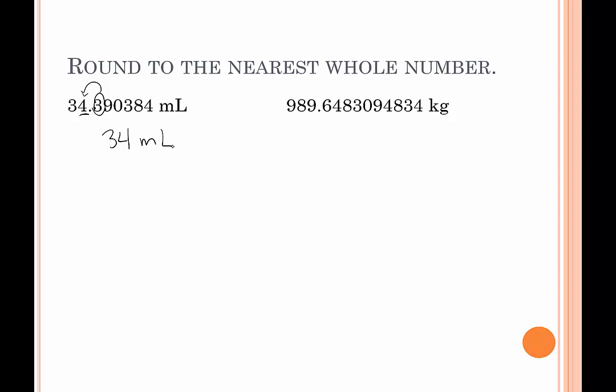In the next example, we have 989-point-something with a long decimal and we want to round to the nearest whole number. Here's our ones place — the end of the whole number. The 6 is in the critical position, so the 6 tells the 9 to bump up. But we can't bump up 9 — it's the biggest digit. So we go to the 8, which gets bumped up to a 9, giving us 990 kilograms. This is saying 989-point-something is in between 989 and 990, and because the tenths place is a 6, it's closer to 990.